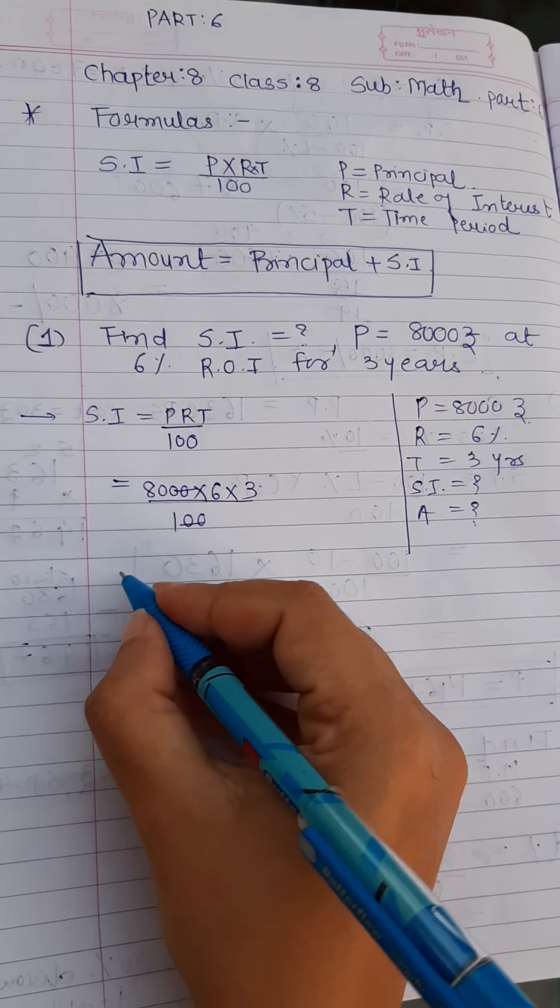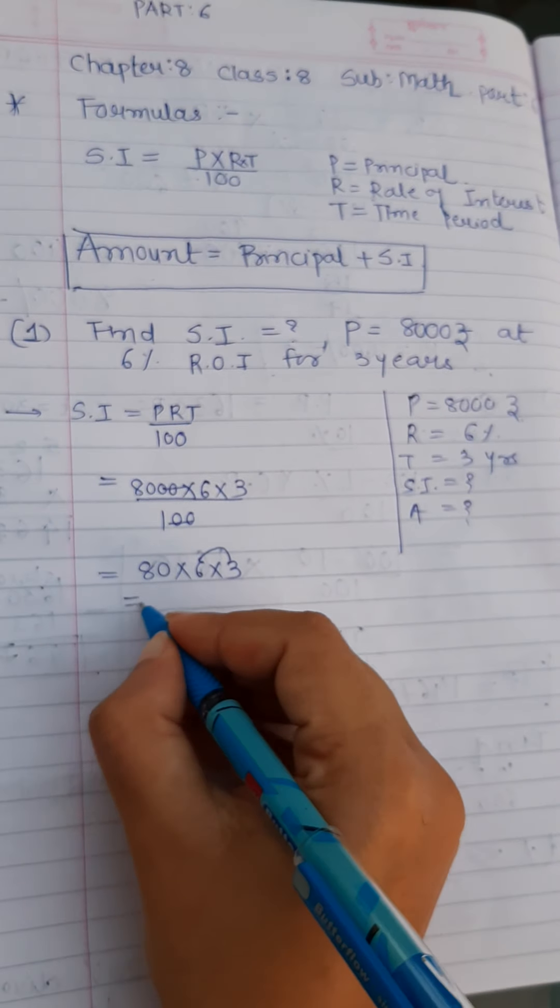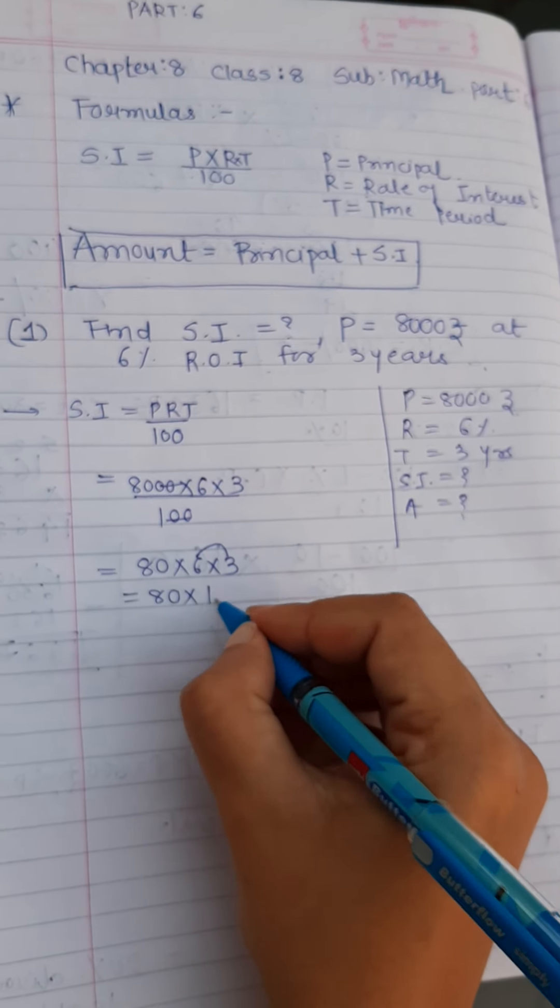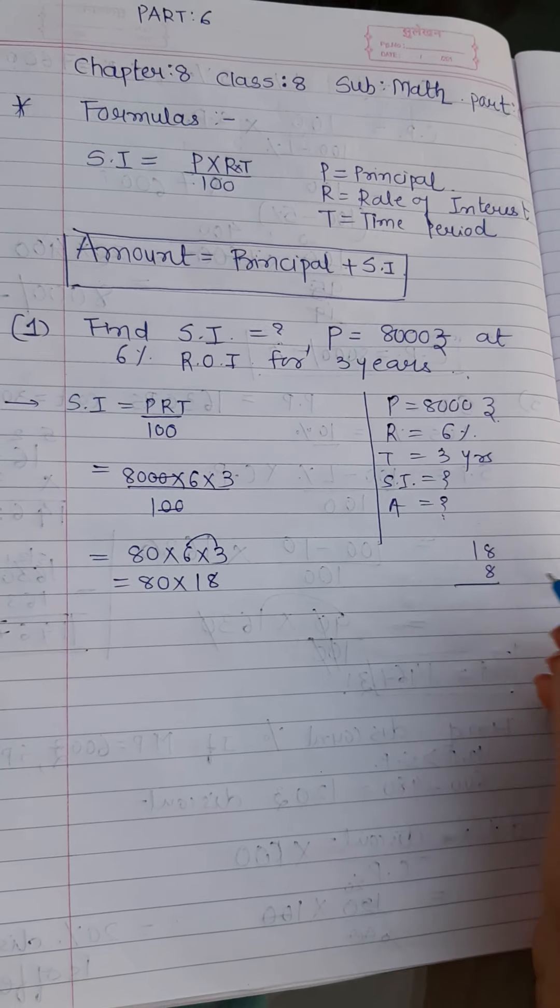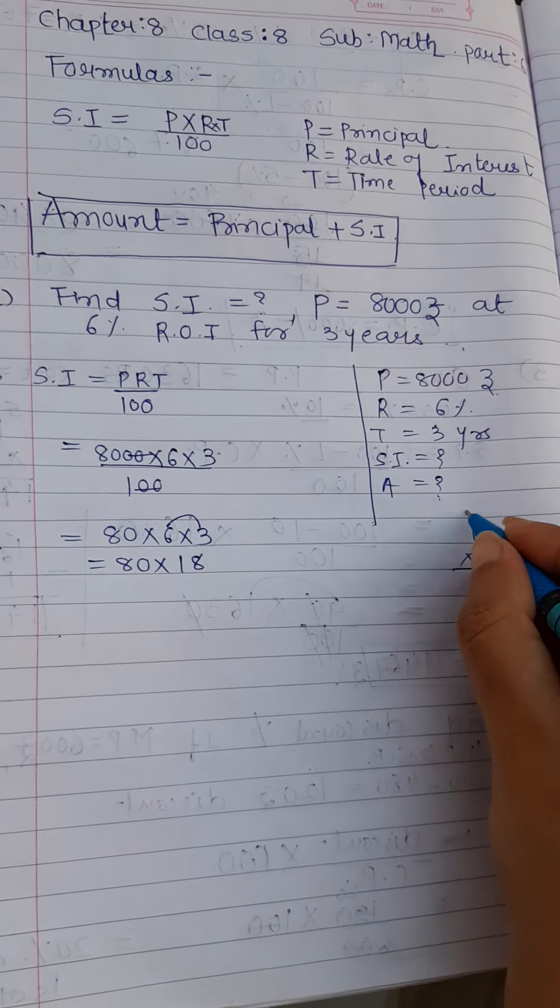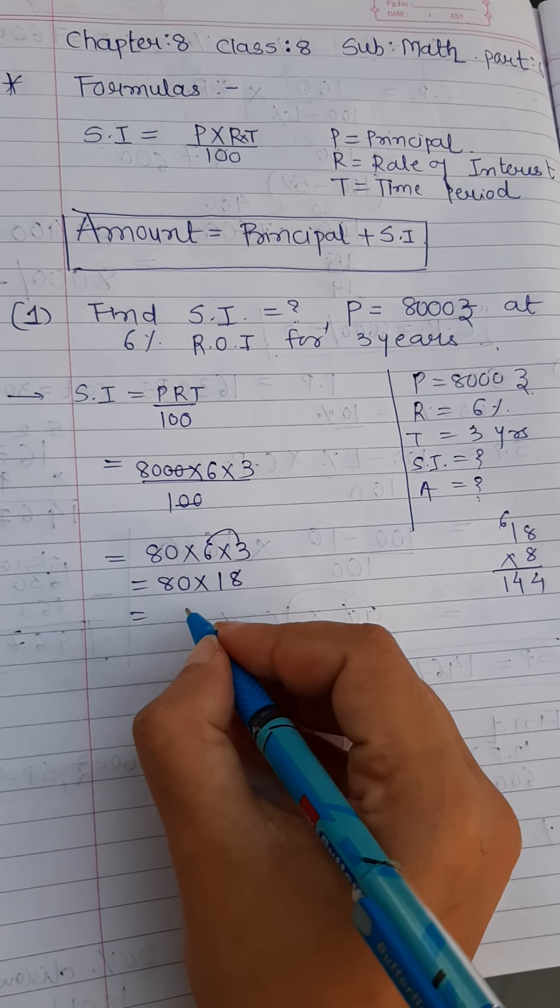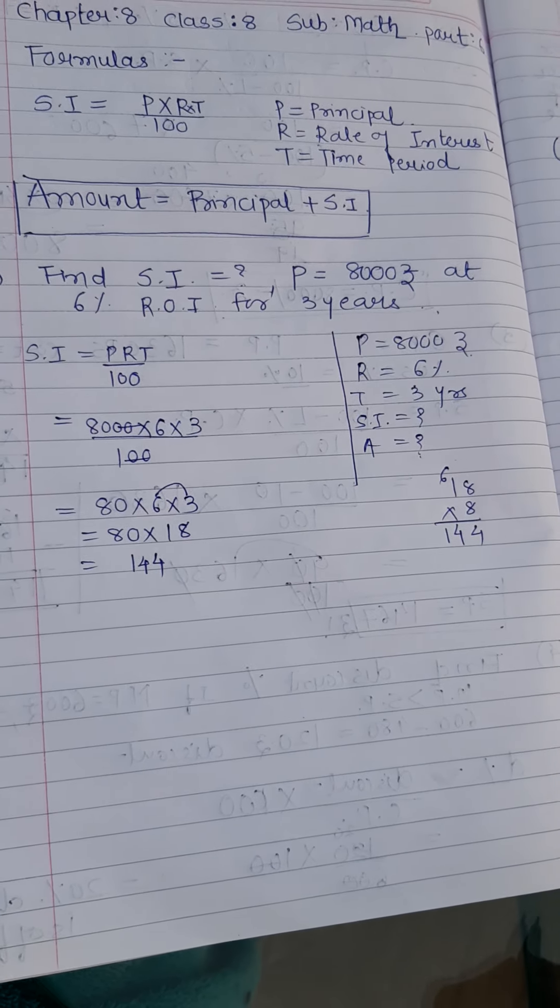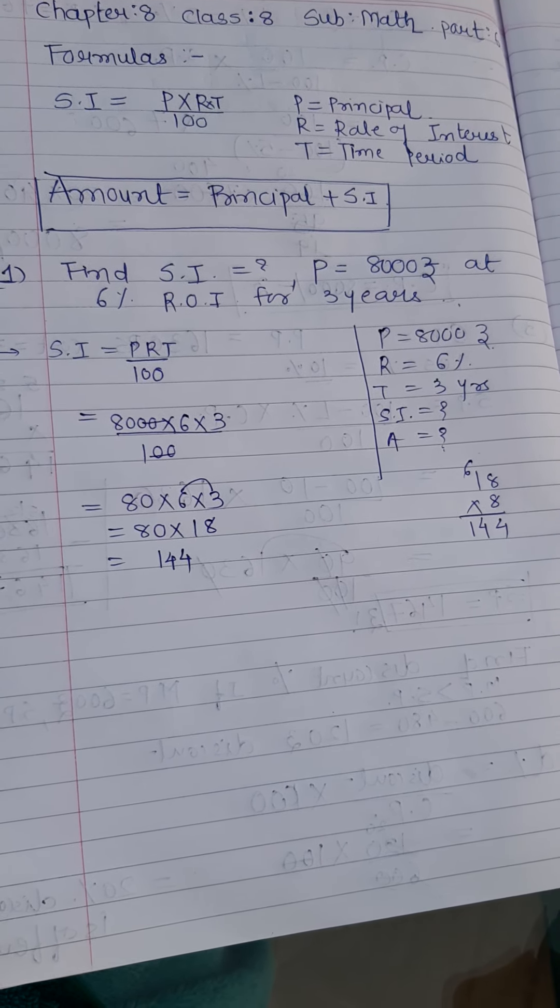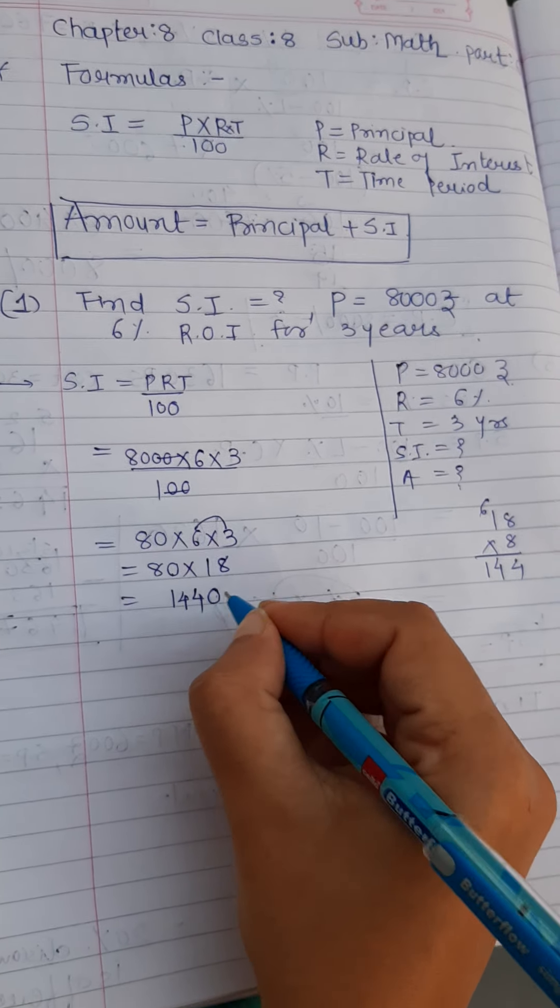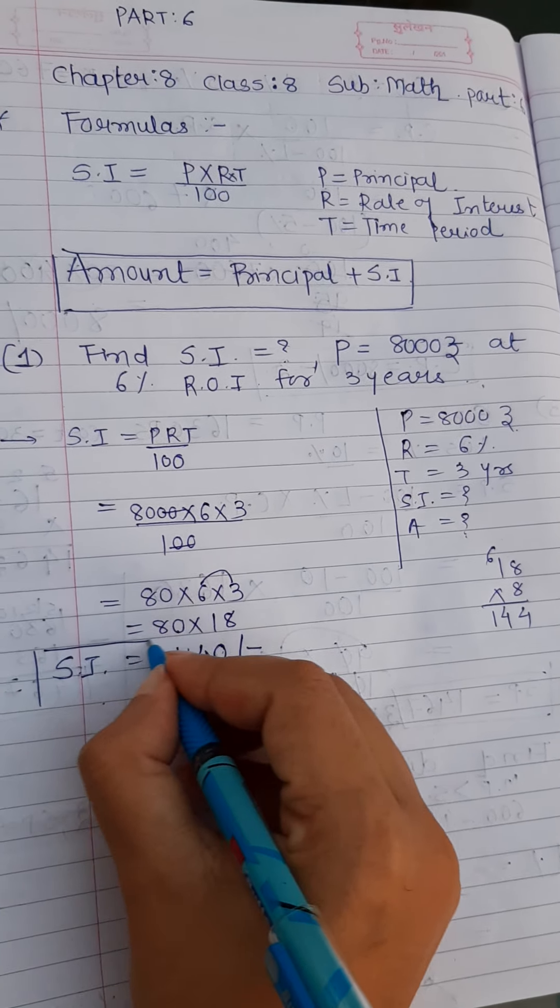Two zeros got cancelled. So what I have left with 80 into 6 into 3. So 6, 3 is 18. 80 into 18. What I will do is 18, 8. So it is 144. 144. Right. Correct. And 1, 0 I need to put here.